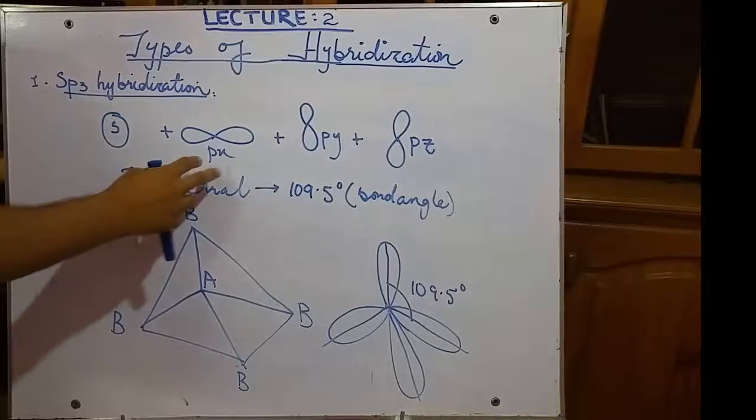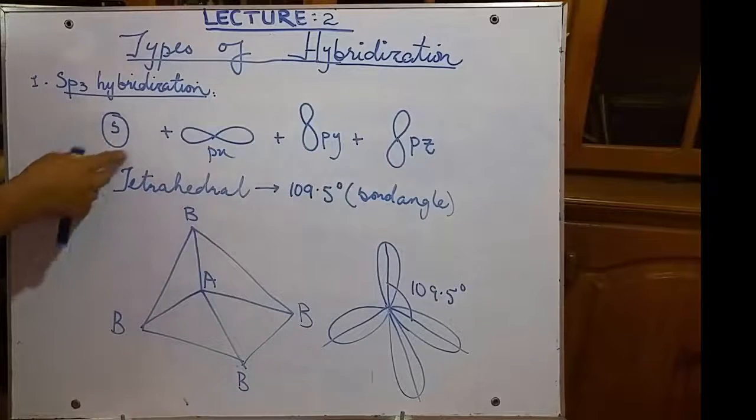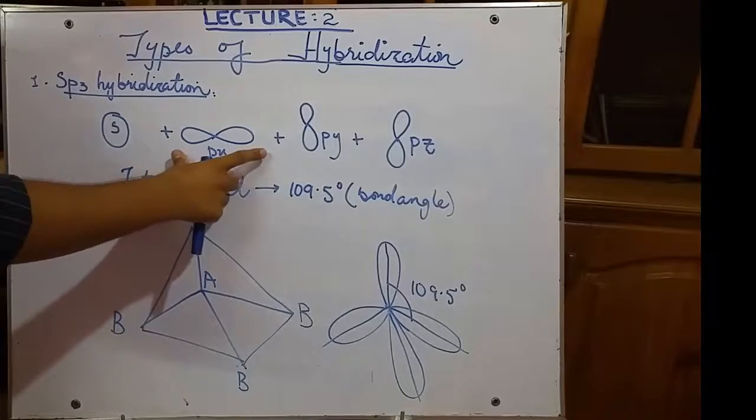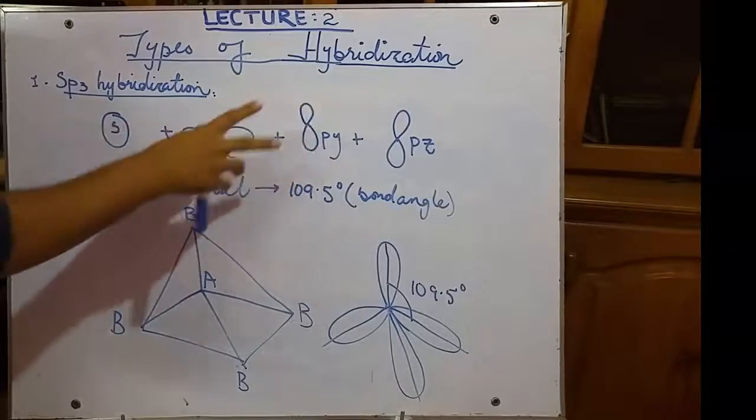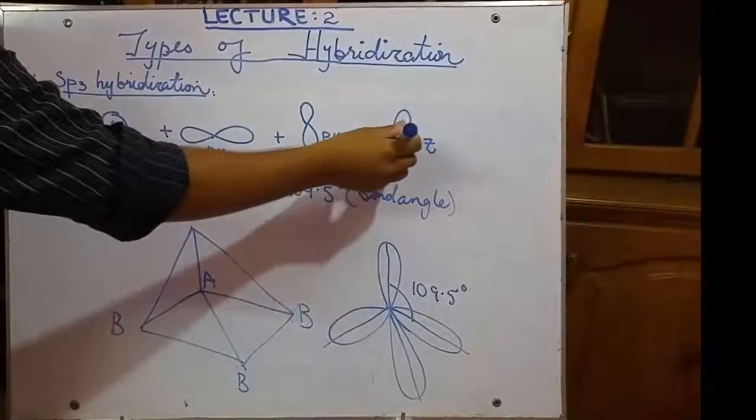As you all know that p orbitals divide into px, py and pz and s orbital is always a spherical one. P orbital is a dumbbell shape, px is in the horizontal x axis and py is in the vertical y axis and z axis is out of the board. That is in the 3D.